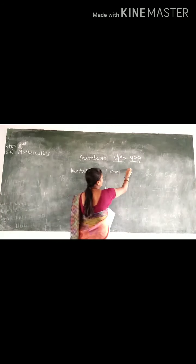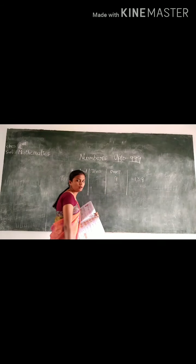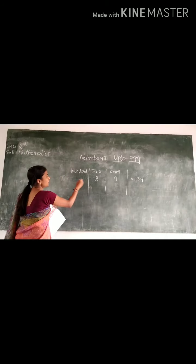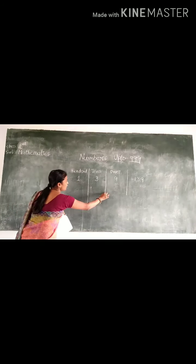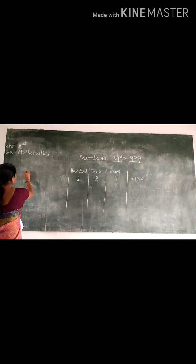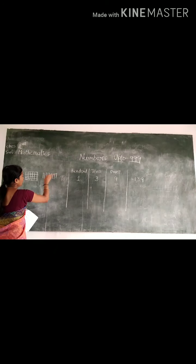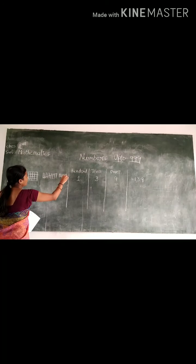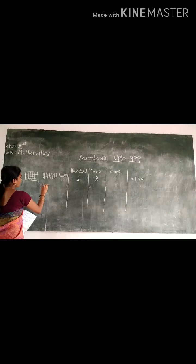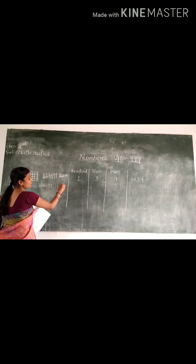If I do 139, how will you write? 9 written in the 1s column, 3 written in the 10s column, and 1 written in the 100s column. For the 10s place, how will you write in a representation of pictures? For the 100s place, write in a box. For the 3 tens: count 1 through 10 three times. How many ones here? 9 ones: 1, 2, 3, 4, 5, 6, 7, 8, and 9. Did you get this?